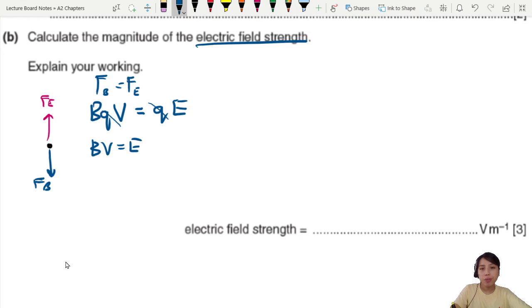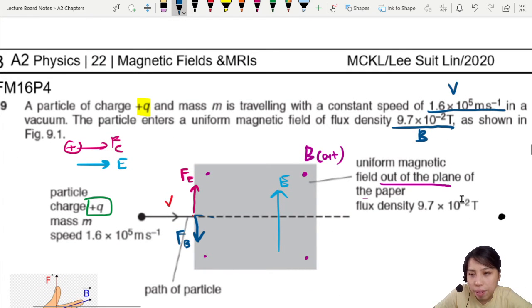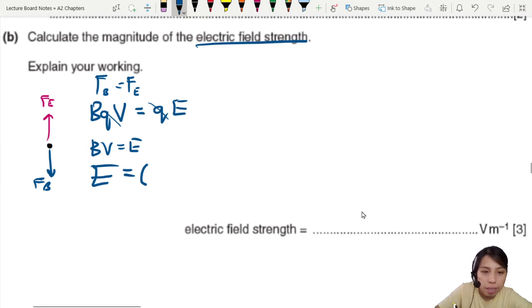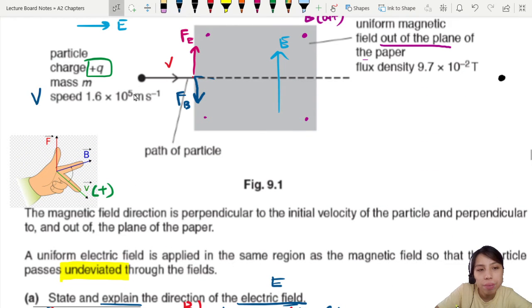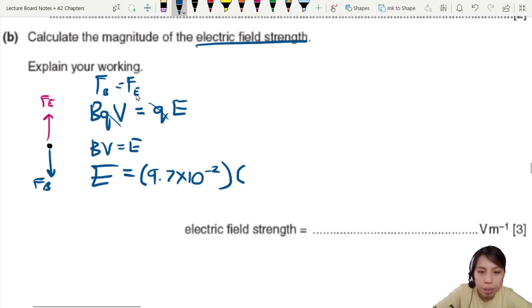Then you write out the expression BQV sine theta. Sine theta is 1, so BQV equals QE. Divide both sides by Q, all you have is BV equals E. So you want to find electric field strength. E will be, what's the B? They gave to us just now, flux density 9.7 times 10^-2. That is how strong the magnetic field is. So let's write that, 9.7 times 10^-2 times V.